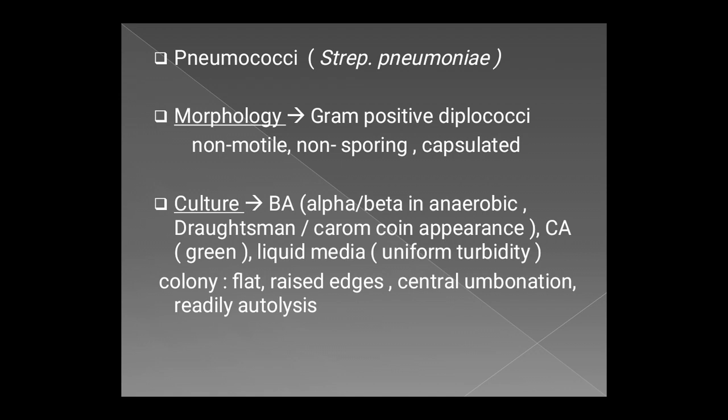Culture is done only in enriched media with blood, egg, or serum, as in blood agar or chocolate agar. It can also be cultured in liquid media, in which it produces uniform turbidity. In blood agar, it produces alpha hemolysis in aerobic conditions and beta hemolysis in anaerobic conditions, because it produces an oxygen-labile hemolysin.